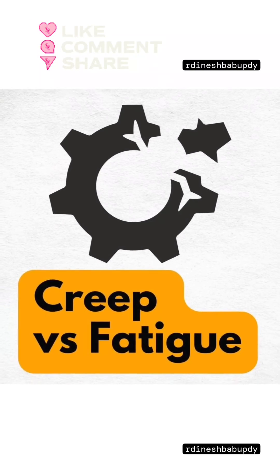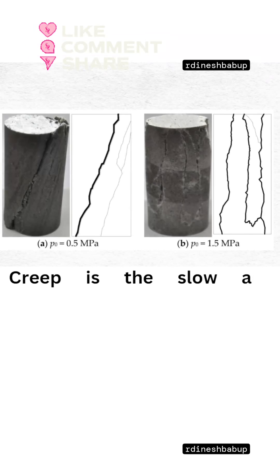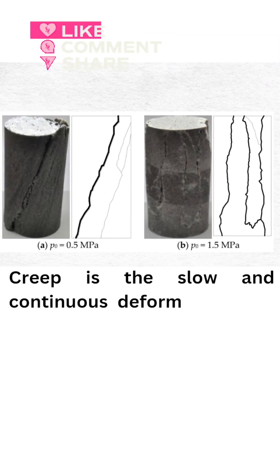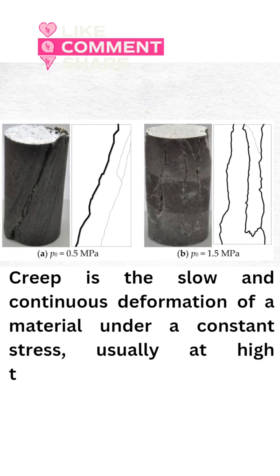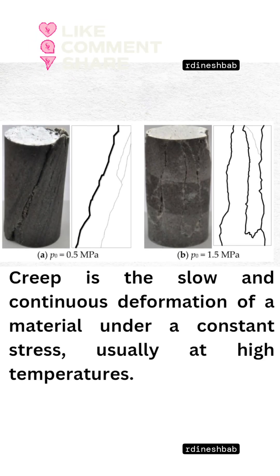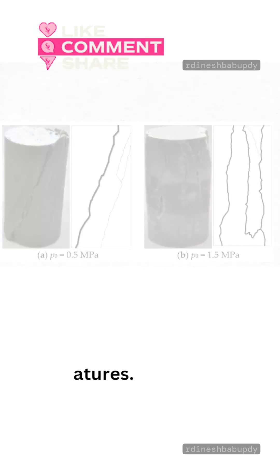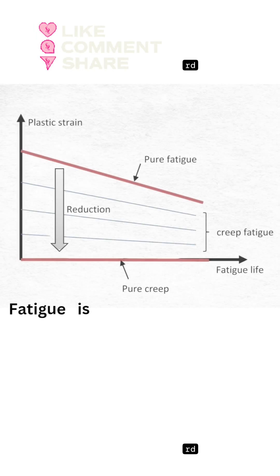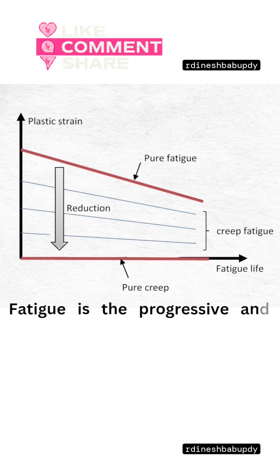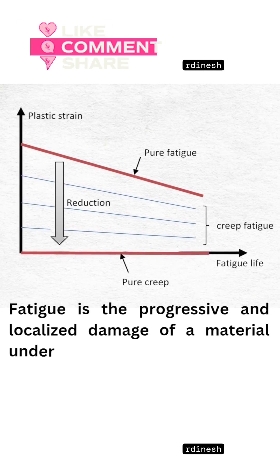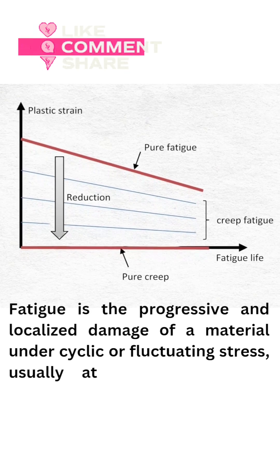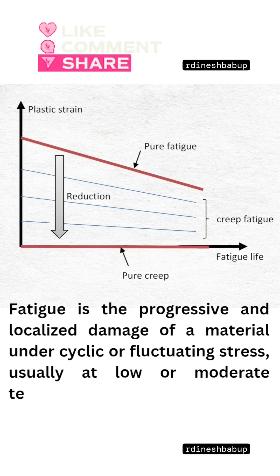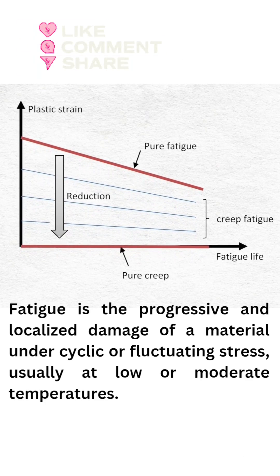Creep vs. Fatigue. Creep is the slow and continuous deformation of a material under a constant stress, usually at high temperatures. Fatigue is the progressive and localized damage of a material under cyclic or fluctuating stress, usually at low or moderate temperatures.